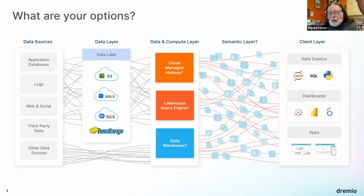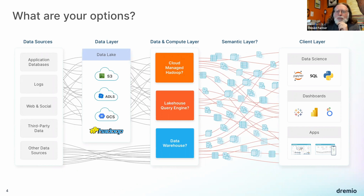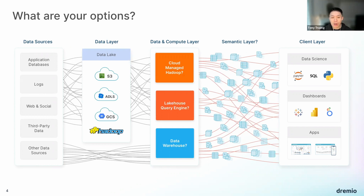Another overlooked issue: when you migrate Hadoop to the cloud, you don't migrate to your own specific version of Hadoop. There are many versions of Hadoop, so if your applications have dependencies on specific versions, it's really difficult to find a matching distribution in the cloud that enables seamless migration. That's a significant problem.